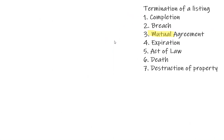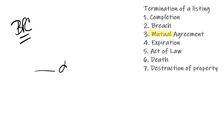Now let's talk about the broker protection clause. It is a blank inside of the listing that allows you to put a number in — for example, for seven days past the listing expiration, anybody that would have been my client during the listing, I get credit for as well.